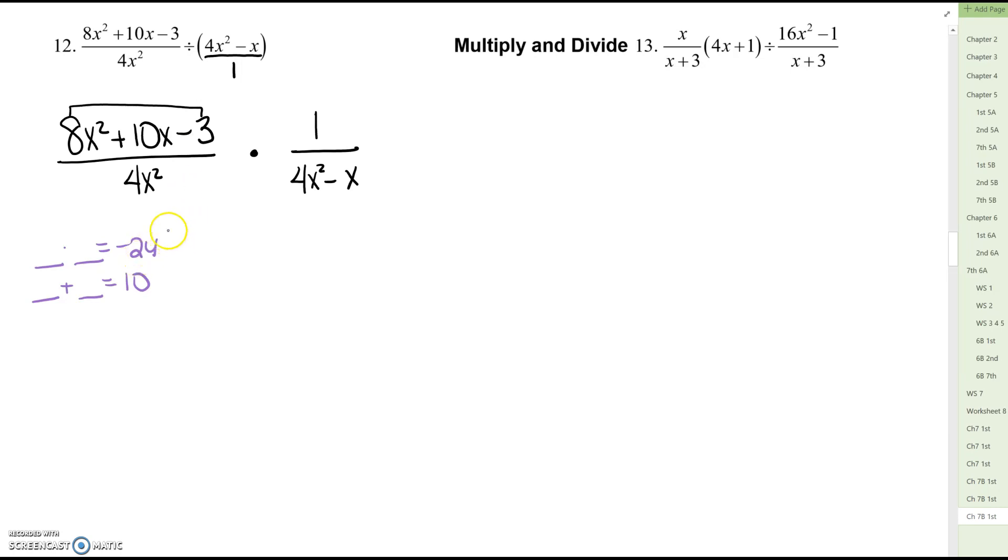So we could do 1 times 24 that's not going to give us 10. 2 times 12. If we had negative 2 and positive 12 that would work. So we take 8x squared we split the 10x into negative 2x plus 12x and we still have the minus 3. So I've rewritten this trinomial but I took this middle term and split it using the two numbers we came up with. Then you take the four terms, split them down the middle, factor the first group, factor the second group.